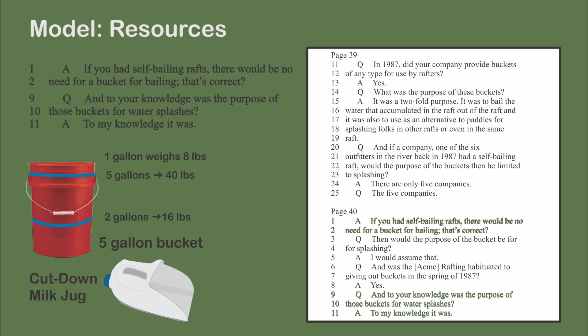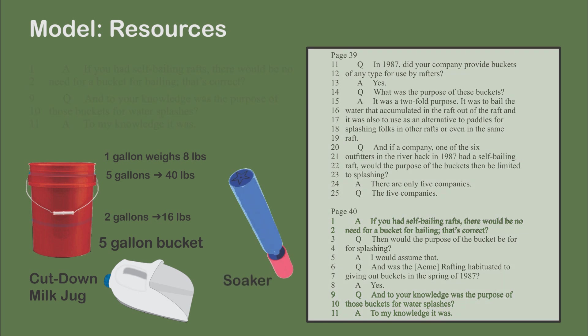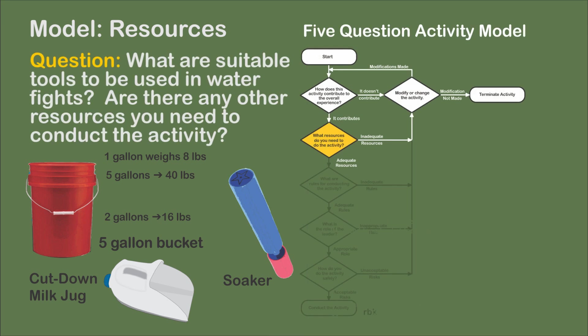A good alternative to the five-gallon bucket is to cut the bottom off a gallon jug. Partially filled, the water weighs a manageable three or four pounds at most. Or, water guns similar to the super soaker can be provided. Question. What are suitable tools to be used in water fights? Are there any other resources you need to conduct the activity?